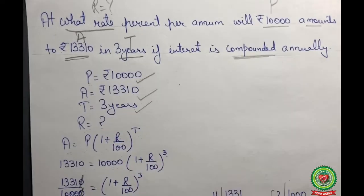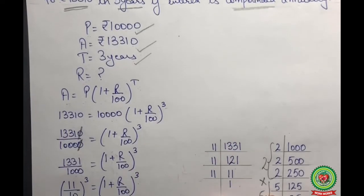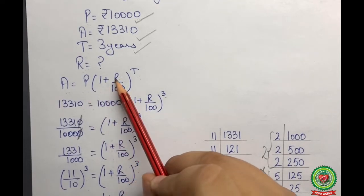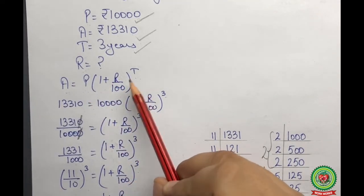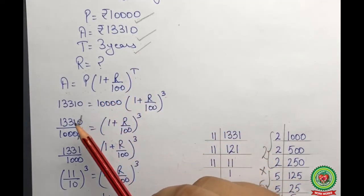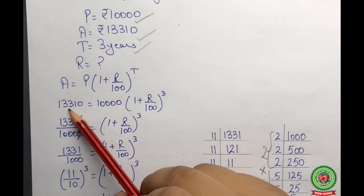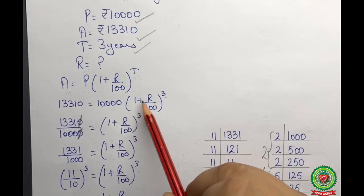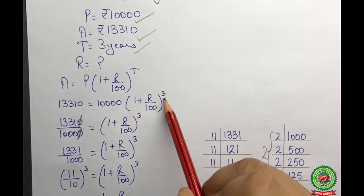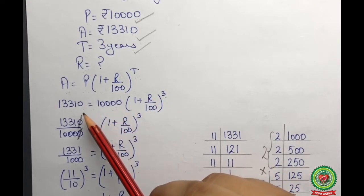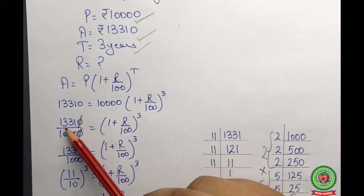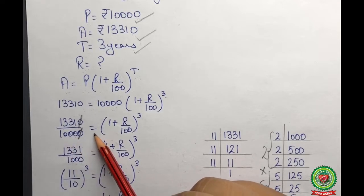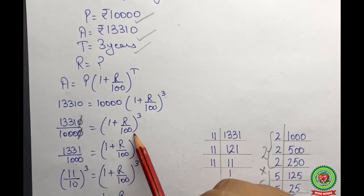We apply the formula: Amount = Principal × (1 + r/100)^t. Substituting the values, we get 13,310 = 10,000 × (1 + r/100)^3. Shifting 10,000 to the other side gives us 13,310/10,000 = (1 + r/100)^3.